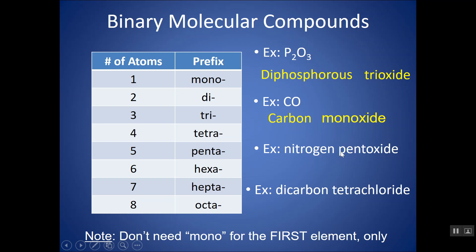You can also go from the name to the formula. The prefix just tells you the subscript. For nitrogen pentoxide: nitrogen has no prefix, so I assume a subscript of 1. Oxygen has the prefix pent- — they dropped the A and wrote pentoxide — so oxygen has a subscript of 5. This gives NO5. There's nothing to switch and no charges to look up; the prefixes tell you the subscripts of the given elements. Very simple.